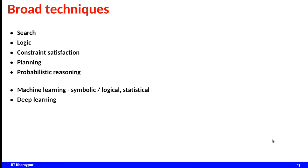The broad techniques looked at in this course are search, logic, constraint satisfaction, planning, and probabilistic reasoning. There are other strategies like machine learning — symbolic, logical, statistical, or deep learning — but we will not focus on those. We will mostly focus on the core AI techniques.